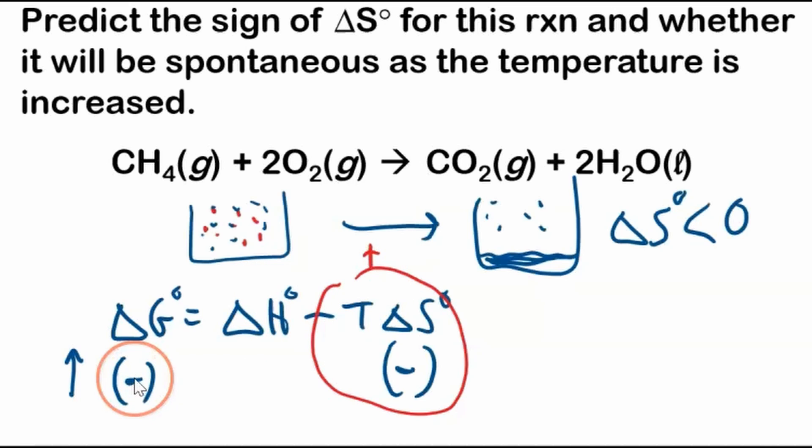Then increasing the temperature will make it worse for being spontaneous. If we want this to be negative, we want the temperature to be as low as possible, so that this term isn't too large. So as the temperature is increased, the change in Gibbs free energy is going to be smaller negatively, and eventually it might even become positive if temperature is high enough. So will it be spontaneous as the temperature is increased? No, it'll be non-spontaneous. Right on.